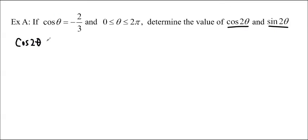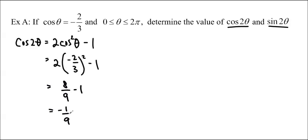Cos 2 theta is equal to 2 cos squared theta minus 1. So we can just plug that value in, negative 2 over 3 squared minus 1. And so we'll get 8 over 9 minus 1, which is negative 1 over 9. So that is the exact value for cos 2 theta.